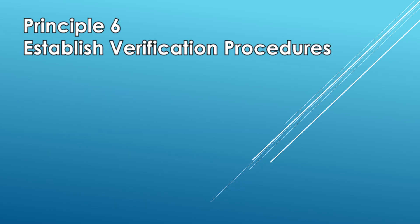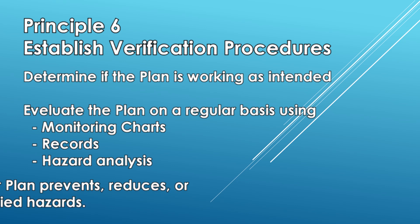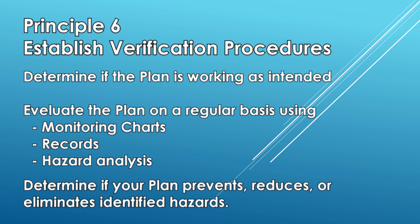Principle 6 — Establish procedures to verify effectivity of the HACCP plan: determine if the plan is working as intended by performing regular evaluation. For example, checking if measurement equipment are working properly and making sure corrective actions have the desired effect. Verify if the plan is effective in the prevention, reduction, and elimination of identified hazards.